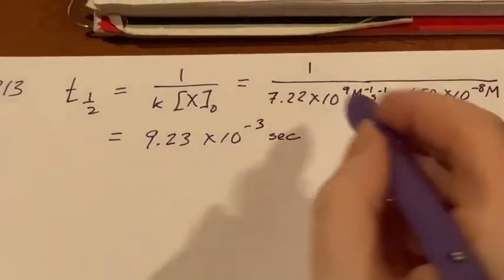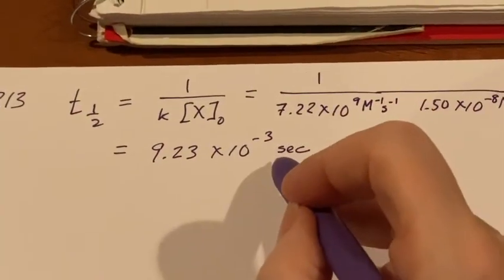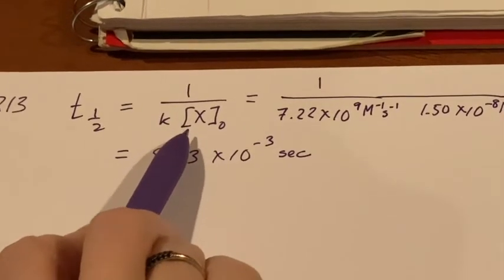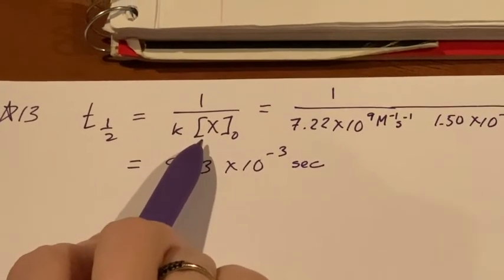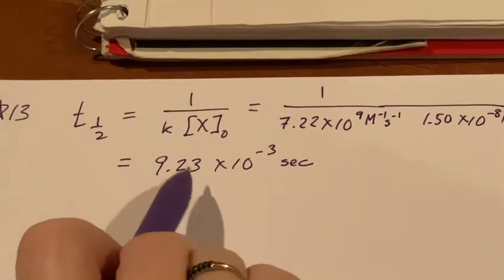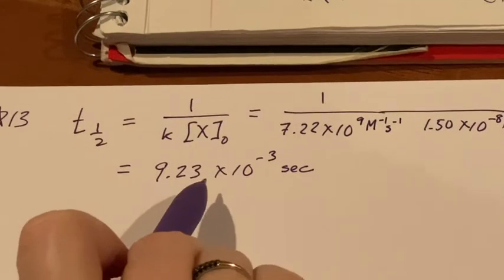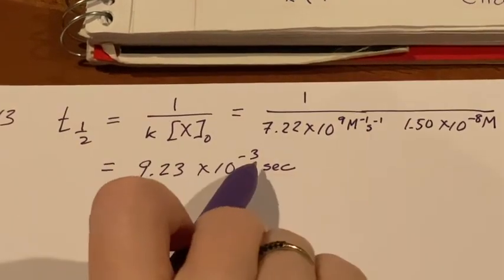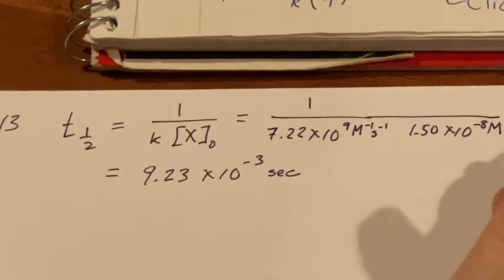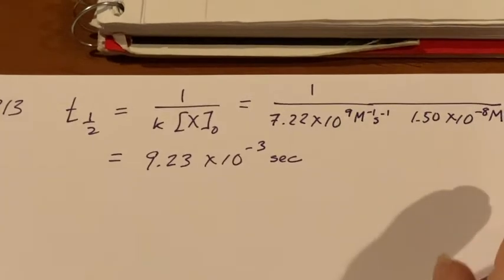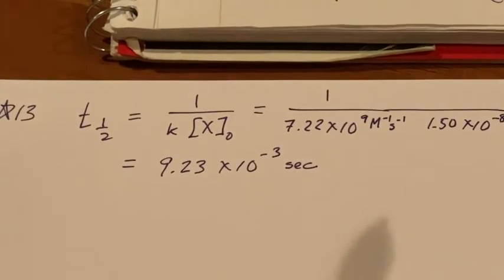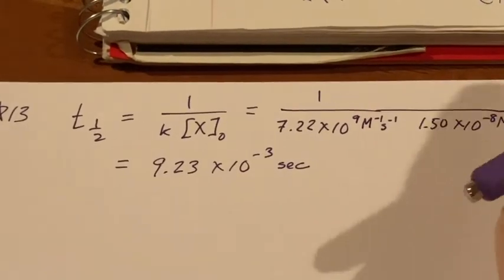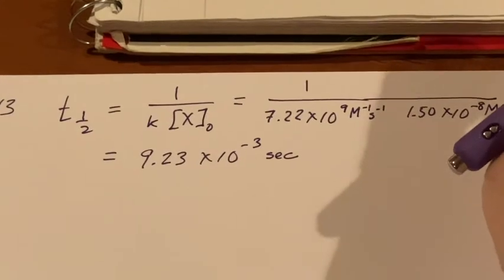Now this is not a constant half-life. If you did this with a different concentration originally, you would get a different half-life. That's the important difference between second order and first order. In first order, the half-life is constant — it doesn't matter when you start, it's the same amount of time every time.